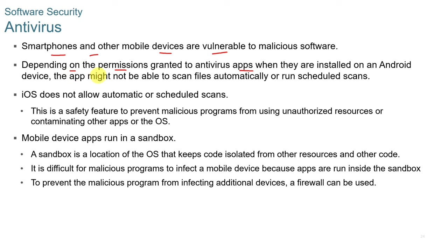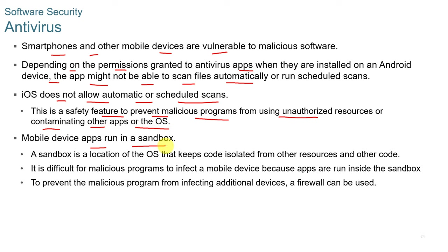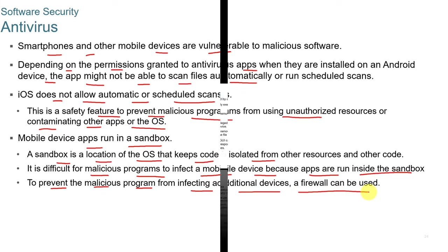Smartphones and mobile devices are vulnerable to malicious software. Depending on permissions granted, antivirus apps on Android may not be able to scan files automatically or run scheduled scans. iOS does not allow automatic or scheduled scans — this is a safety feature to prevent malicious programs from using unauthorized resources or contaminating other apps. Mobile device apps run in a sandbox, which keeps code isolated from other resources and code, making it difficult for malicious programs to infect a mobile device. A firewall can also be used to prevent malicious programs from spreading.